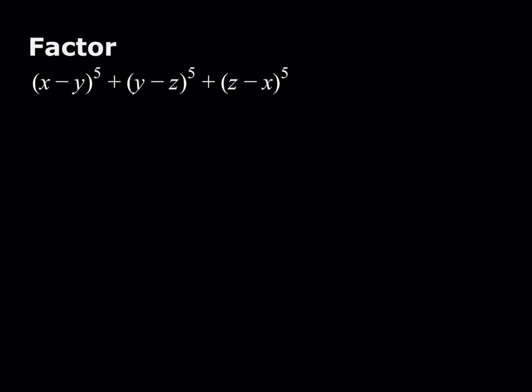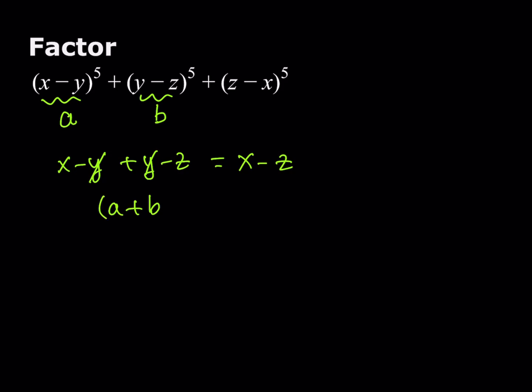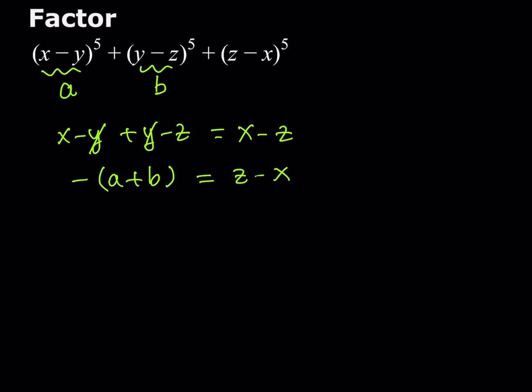So here's the plan. I'm going to call (x minus y) here 'a', and I'm going to call (y minus z) 'b'. You might be asking why I'm not calling the third one 'c'. There's no need for that, because if you add (x minus y) and (y minus z), you actually get (x minus z). So if I'm trying to get (z minus x), it's just the opposite. Therefore, if I add a plus b and put a minus sign in front of it, that gives me (z minus x). So I've expressed everything in terms of a and b — those are my new variables — and I'll back-substitute at the end.